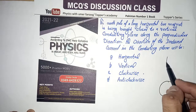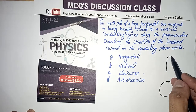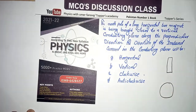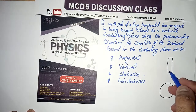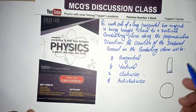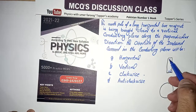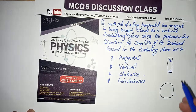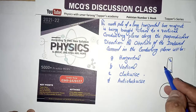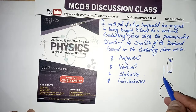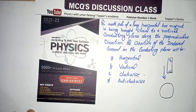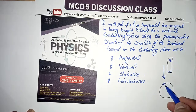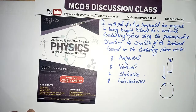Here we bring a bar magnet perpendicular to the conducting loop — north pole is this end and south pole is the other. It is coming in a downward direction. So the direction of induced current will be anti-clockwise.